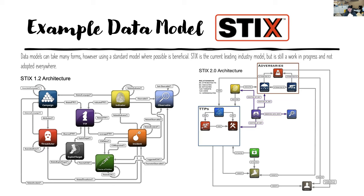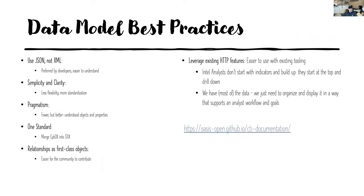The STIX data model is ever-evolving. STIX 2.0 is probably the most commonly used, however STIX 2.1 has been introduced and is starting to become more widely adopted within the industry. I recommend looking at the STIX data model at oasis-open.github.io, or just search for it. There's been a move towards JSON rather than XML — we want to keep things as simple and clear as possible.